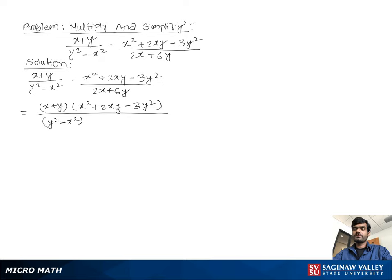Now we factor the numerator. We have (x + y) times the factored form of x² + 2xy - 3y², which equals (x - y)(x + 3y).